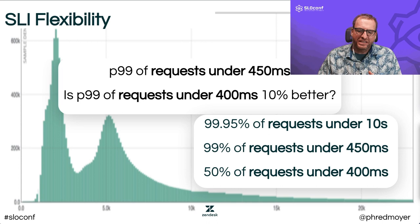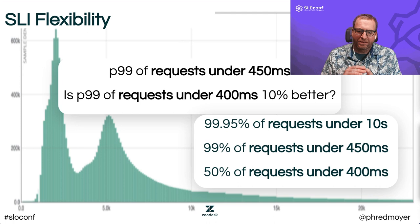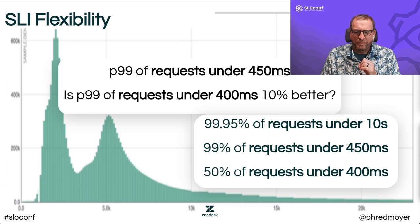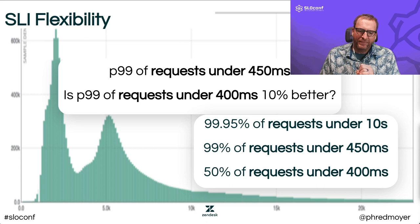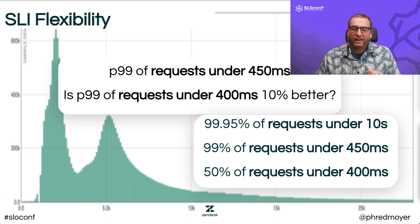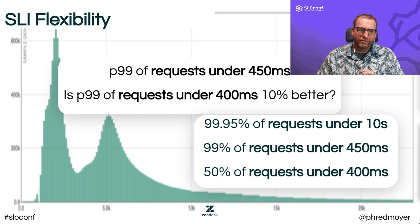With a latency band-based SLO, you can say I want 99.95% of my requests under 10 seconds, and also add other SLIs like I want 99% under 450 milliseconds and my median under 400 milliseconds. This allows you to specify success objectives precisely — 99.95% if you're in enterprise. It also tells you: if my success objective is 99.95% and I only hit 99.9%, I can calculate pretty well how many more events I need to exhaust my error budget. Using latency bands allows much greater SLI flexibility.